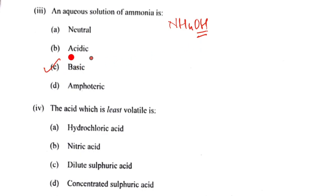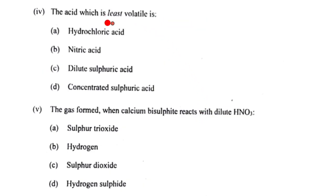Question 4: The acid which is least volatile or non-volatile is concentrated sulphuric acid. So that will be option D. Question 5: The gas formed when calcium bisulfate reacts with dilute acid liberates sulfur dioxide. The correct option is C.